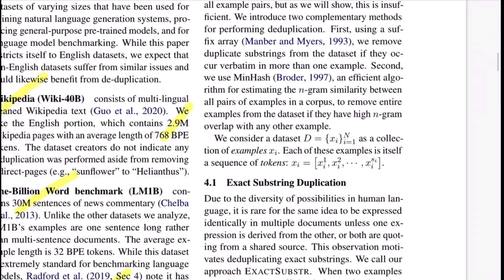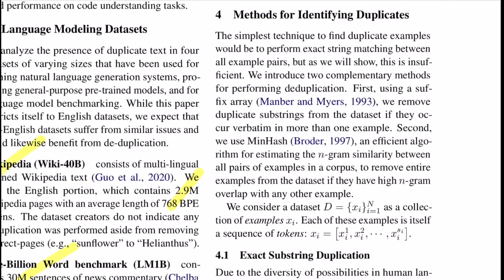They introduced two complementary methods for performing deduplication on large-scale datasets. One is based on deduplicating by substring match, and for the second one they use minhash, which estimates the n-gram similarity between pairs of examples in the corpus. The higher the n-gram overlap, the more the chances of two examples overlapping.